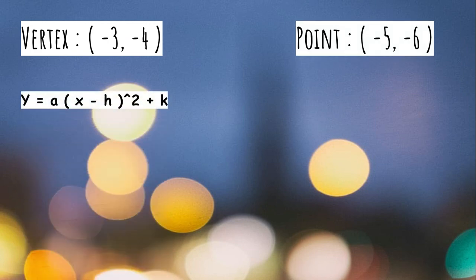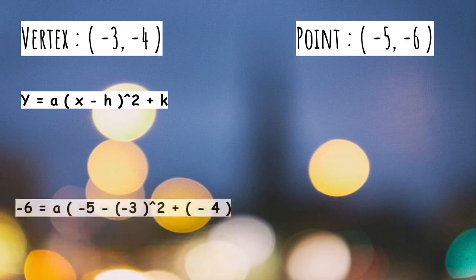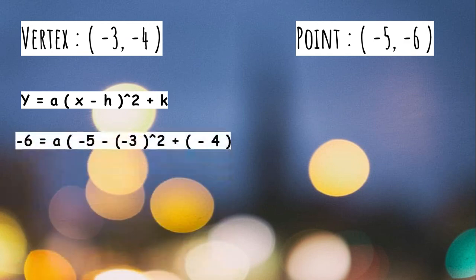The formula is y = a(x - h)^2 + k. You're going to write these numbers in this formula. -6 = a(-5 - (-3))^2 + (-4).